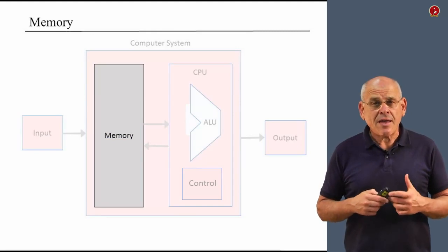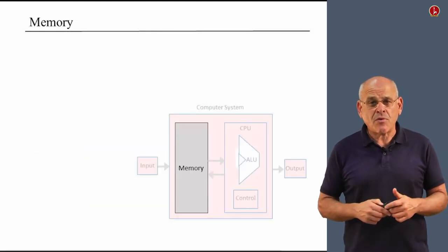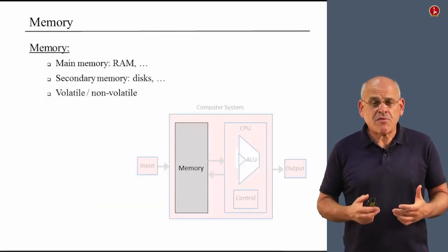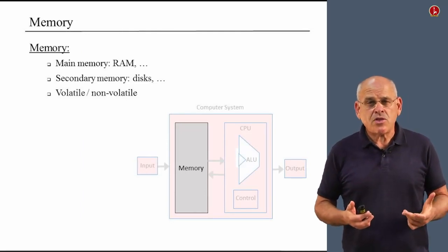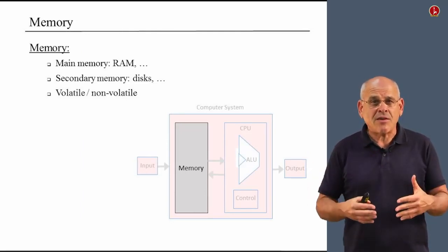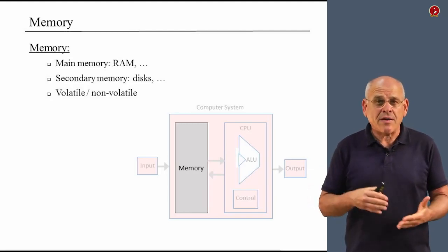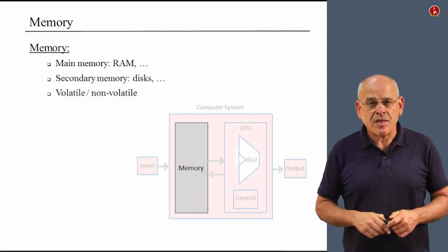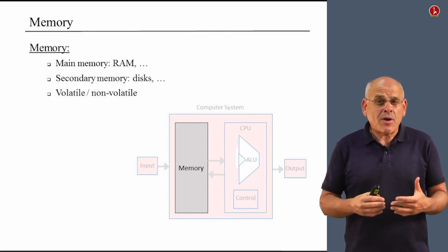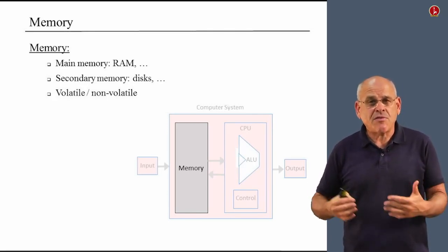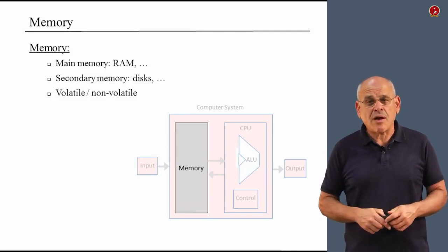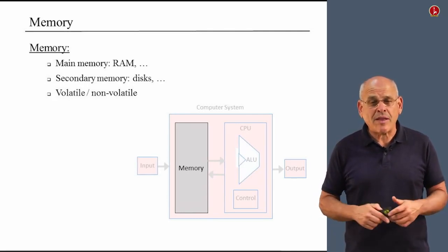When we say memory in computer hardware, we mean many different things. First of all, there's main memory, which consists of the memory that resides actually inside the computer and hardwired into the computer's motherboard. This main memory also divides into several different categories. The most famous one is called RAM, or Random Access Memory.